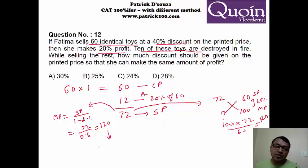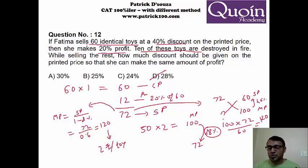So you can find the mark price by selling price upon 1 minus discount percentage, which is 72 upon 0.6, which is 120. Or you can do by cross multiplication. If mark price is 100, my selling price will be 60 because of 40% discount. If the selling price is 72, what is the mark price? You can cross multiply. So you get 120. So my mark price is 120. When you say mark price is 120, it basically means 2 rupees per toy. Because for 60 toys, the mark price is 120.